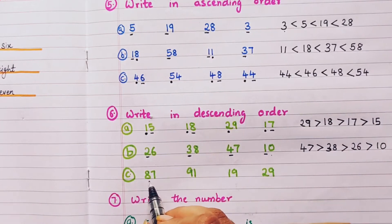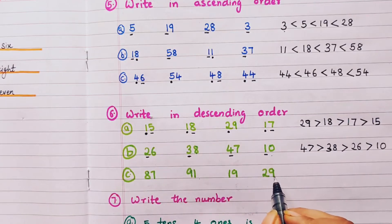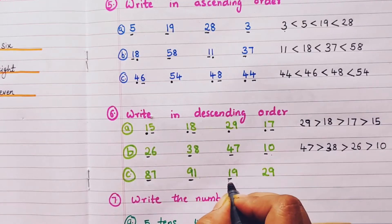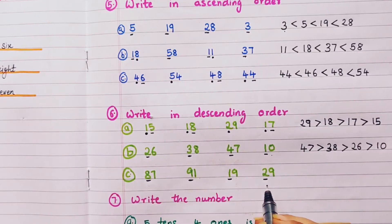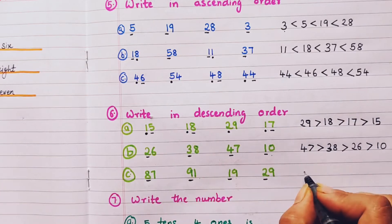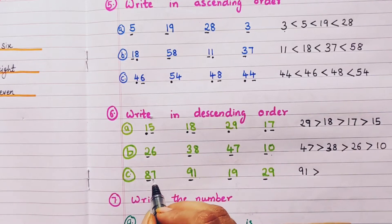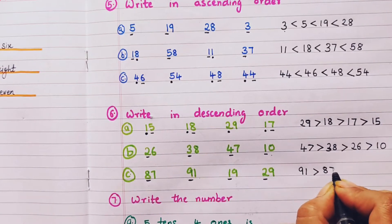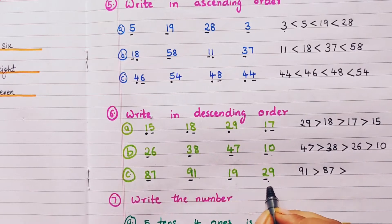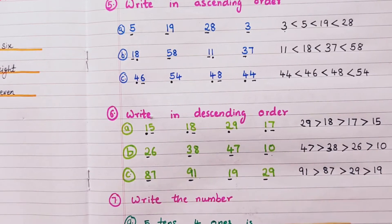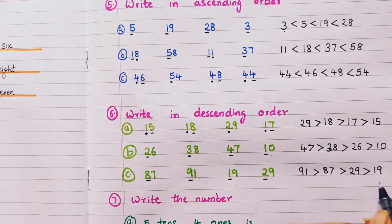Next set: 87, 91, 19, and 29. Compare tens: 8, 9, 1, 2. Largest is 9, so 91 is first. Then 8 so 87. Then compare 29 and 19: 2 is bigger than 1, so 29 comes before 19. Descending order: 91, 87, 29, 19.